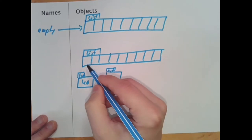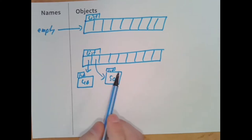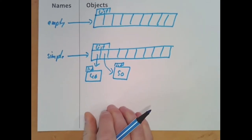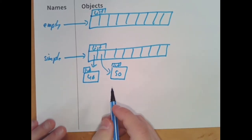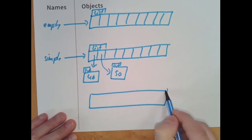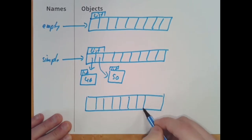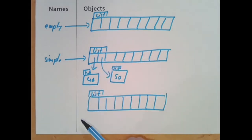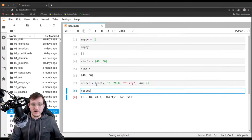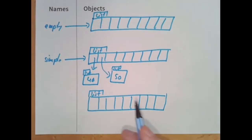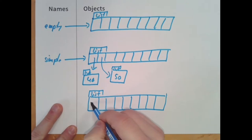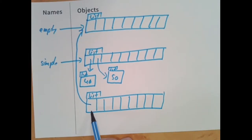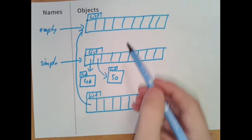This brings into play what we mentioned: lists are just containers holding references to other objects. Now comes the third list — the nested list. Its first element is a reference pointing up to the empty list object. We put in a reference that simply points to the other list. The second element was the number 10 as an integer, and we place a reference to it. Python chooses where to put all elements in memory — we have nothing to do with that, which is one of the reasons Python is such an easy language for beginners.